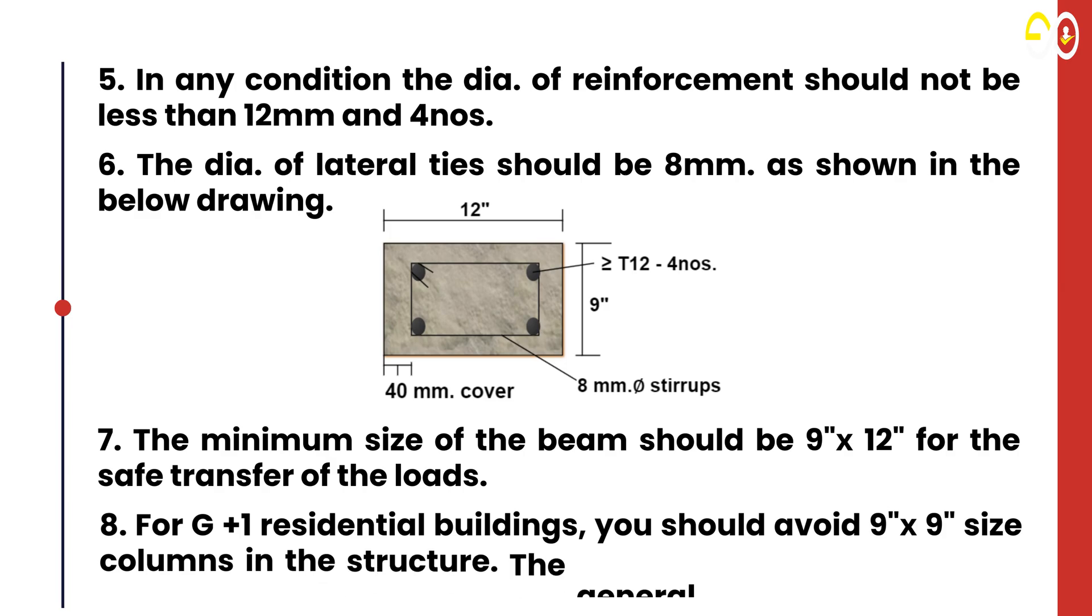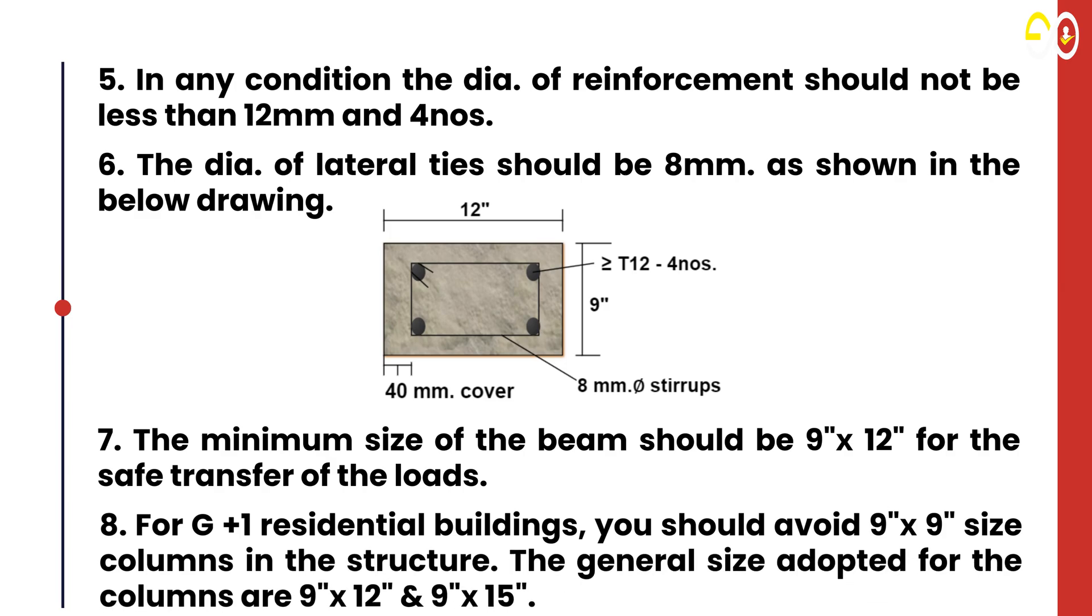8. For G+1 residential buildings, you should avoid 9" x 9" size columns in the structure. The general size adopted for columns are 9" x 12" and 9" x 15".